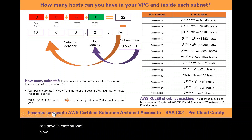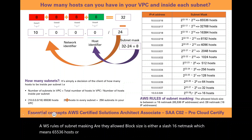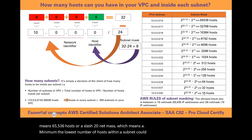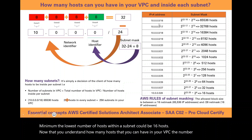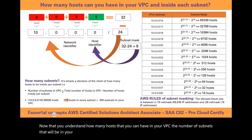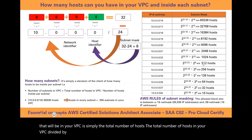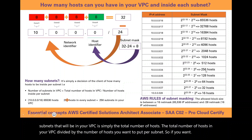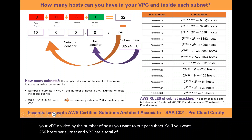AWS rules for subnet masking: the allowed block size is either a /16 netmask, which gives 65,536 hosts, or a /28 netmask, which gives the minimum of 16 hosts. The number of subnets in your VPC is the total number of hosts in your VPC divided by the number of hosts you want per subnet. So if you want 256 hosts per subnet and your VPC has 65,536 hosts total, you will have a total of 256 subnets.